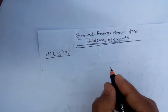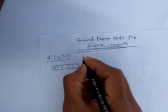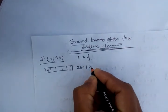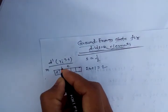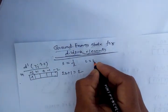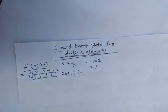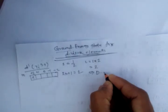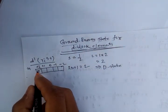For a d¹ system, draw the d orbitals — one electron is present. So the spin quantum number s is equal to 1/2, so 2s+1 is equal to 2. The magnetic quantum numbers are 0, +1, +2, −1, −2. The electron is present in magnetic quantum number 2, so L is equal to 2, which gives the D state.